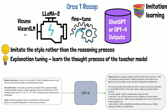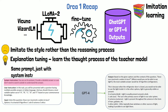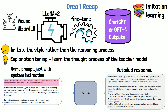For example, when generating a sample for Orca training using the same query as before, an addition to the prompt is a system instruction that provides guidelines for GPT-4 regarding how it will generate the response. For example, it says: 'You are an AI assistant. Provide a detailed answer so the user won't need to search outside to understand the answer.' This yields a very detailed response that includes reasoning for the answer. With this approach, Orca 1 was able to achieve remarkable results with a relatively small model, showing great potential for small models.